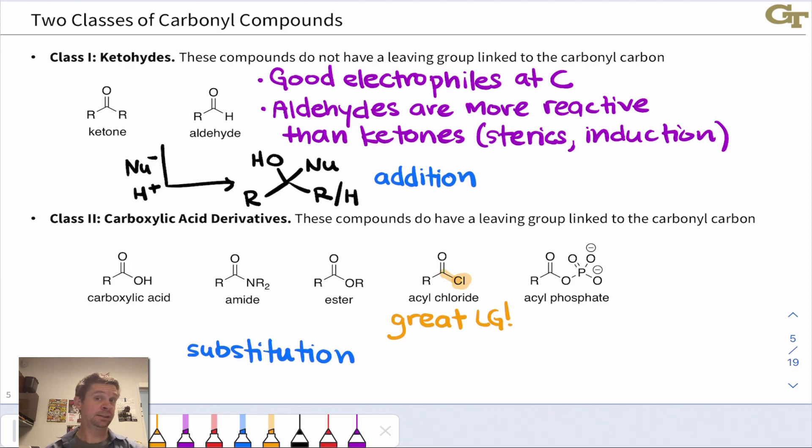That chlorine is a great leaving group. So what can happen at the carbonyl carbon is nucleophilic substitution. A nucleophile can displace chloride. This does not involve an SN2 mechanism, as we'll explore in an upcoming unit. But it shows the typical reactivity of carboxylic acid derivatives.